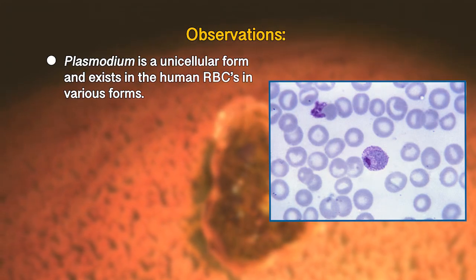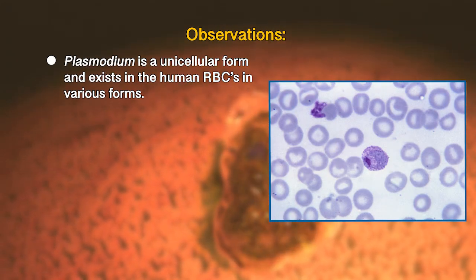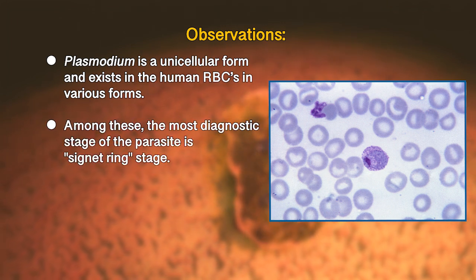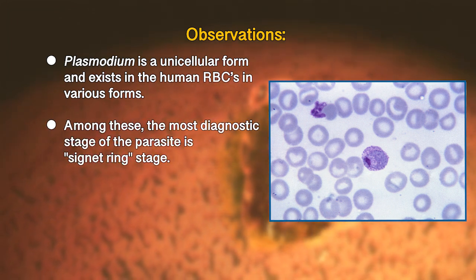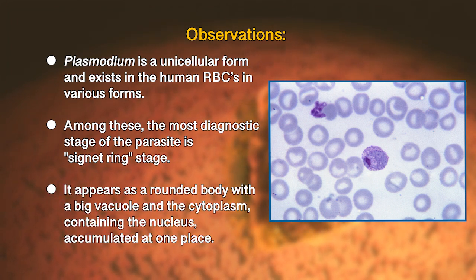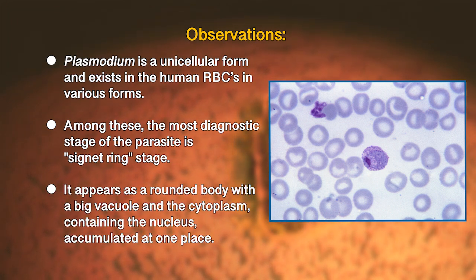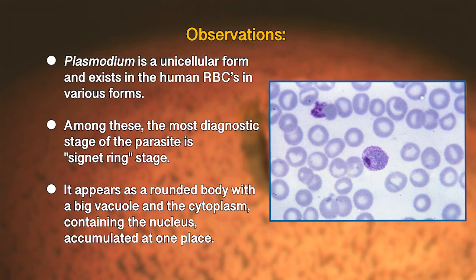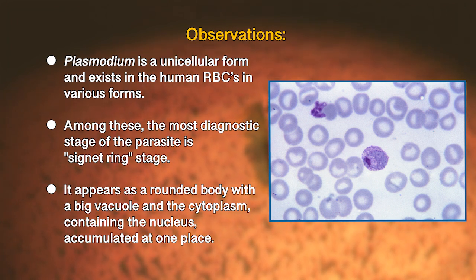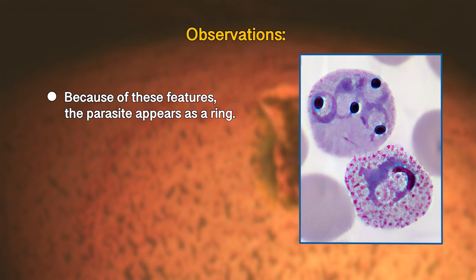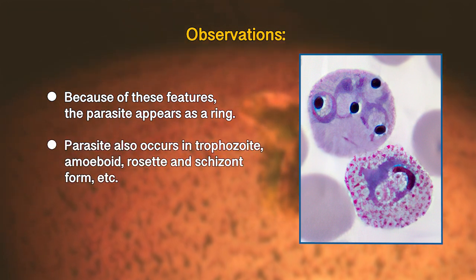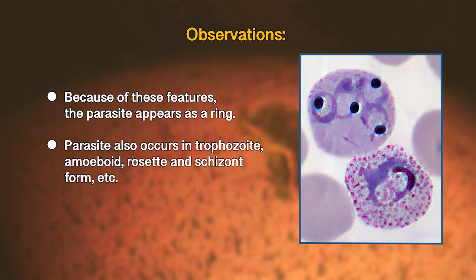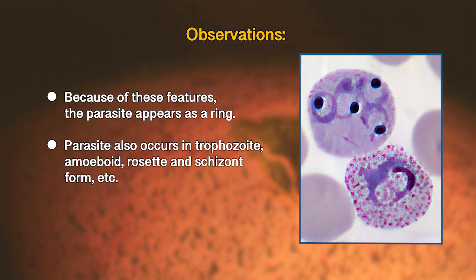What we have observed under the slide is that Plasmodium is a unicellular form and exists in the human RBCs in various forms. Among these, the most diagnostic stage of the parasite is the signet ring stage. It appears as a rounded body with a big vacuole, with the cytoplasm containing the nucleus accumulated at one place — because of these features, the parasite appears as a ring. The parasite also occurs in trophozoite, amoeboid, rosette, and cytozoite forms.